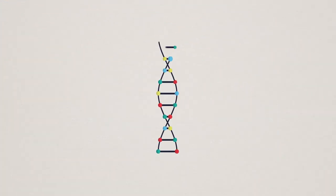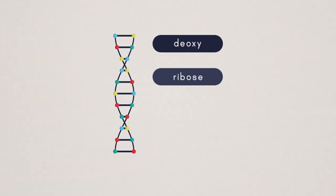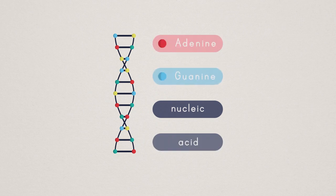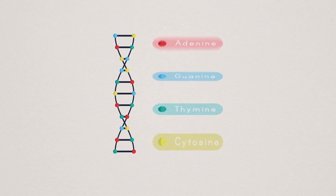Our genetic material is made up of DNA. Deoxyribose nucleic acid is the very long chains of four chemical letters — Adenine, Guanine, Thymine, and Cytosine — that combine to make our genetic code.